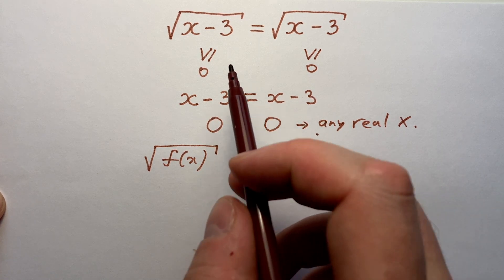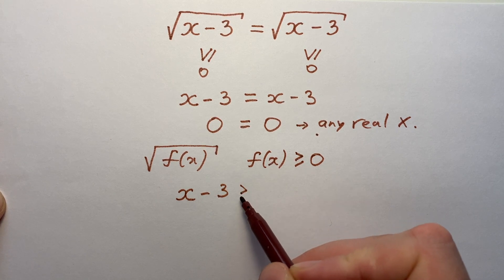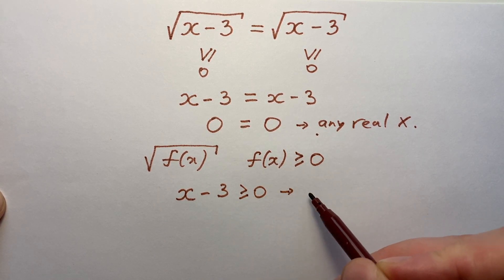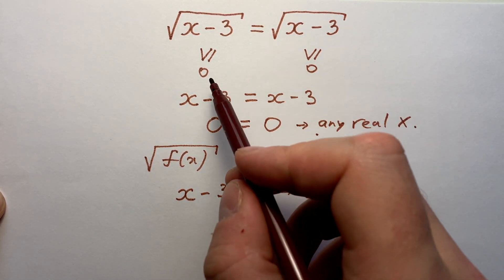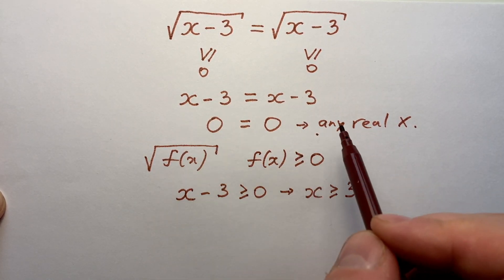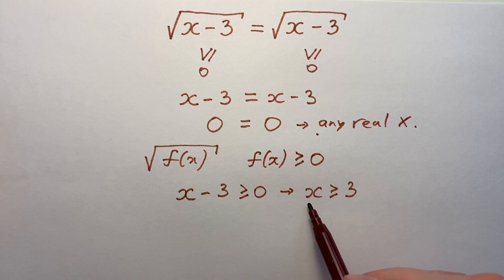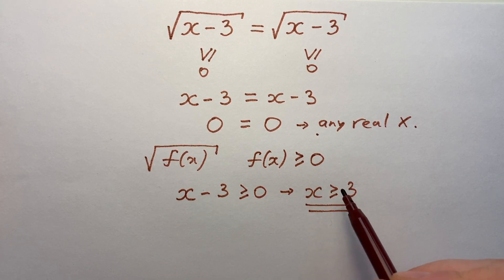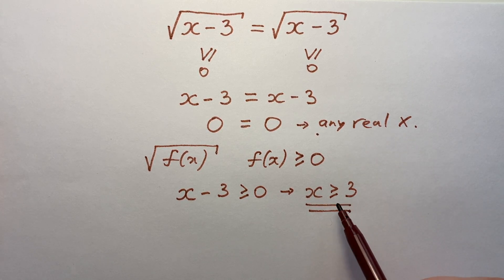So at first they should write that x minus 3 is more or equals to zero, so x is more or equals to 3, and after that solve this equation by squaring. So finally we understand that the solution is x is more or equals to 3, or all real x from x equals 3 to infinity.